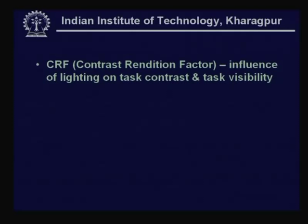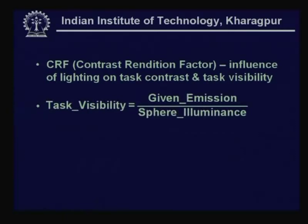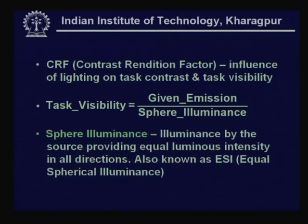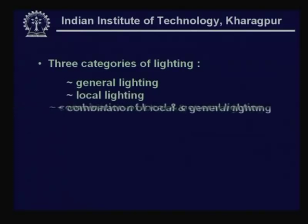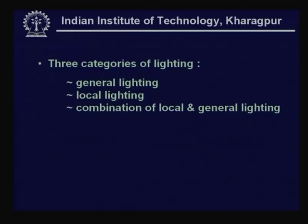One factor designed in terms of the influence of lighting on task visibility is the contrast condition factor. Task visibility is discussed in terms of the total theoretical illuminance possible in a spherical direction with respect to given emission - the sphere illuminance, also known as ESI or equivalent spherical illuminance. This is how one talks about task visibility. General lighting combined with local lighting also helps to a large extent in taking care of glare.